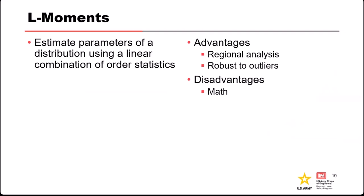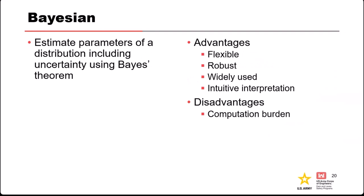L-moments: the L stands for linear—it's a linear combination of the order statistics for your data. The big advantage is it's really good for regional analysis—when you're trying to expand datasets in space by doing analysis over a region. It's also pretty resistant to the ill effects of outliers in your data, making it robust. But it involves more math.